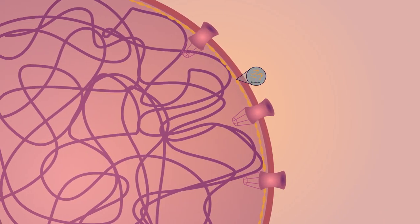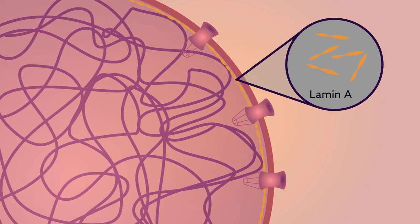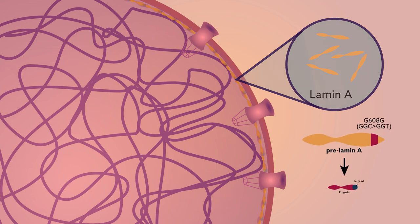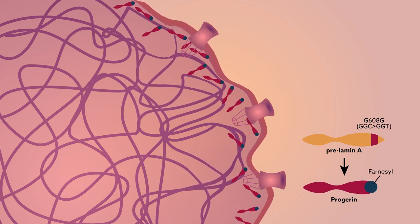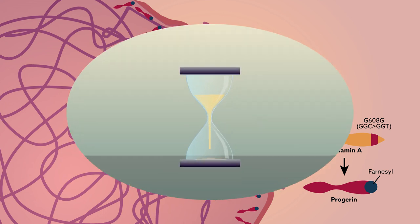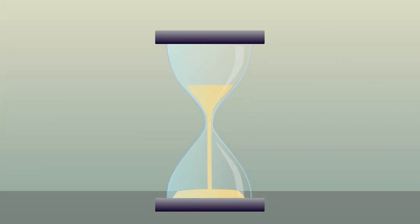Progeria is caused by a tiny point mutation in the lamin A gene. This gene is responsible for producing structural proteins called lamins, which form the scaffolding that holds the cell nucleus together. The mutated form of pre-lamin A, called progerin, destabilizes the cell nucleus, the genetic control center of cells. The result is the fast aging effects observed in progeria.